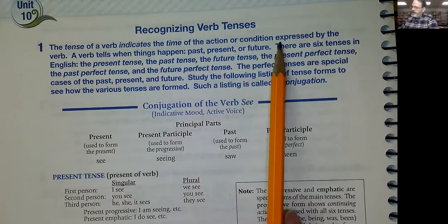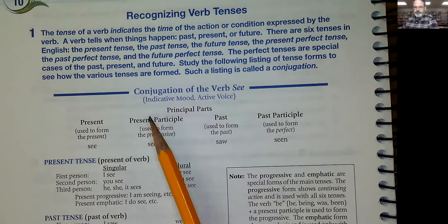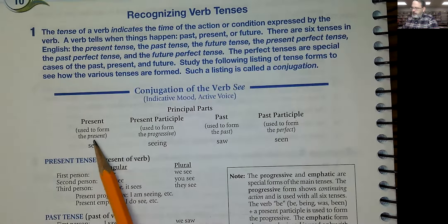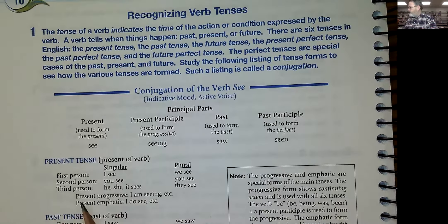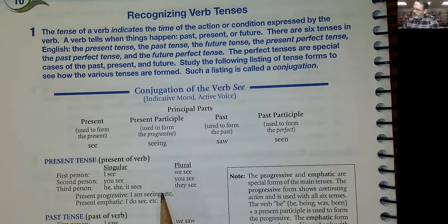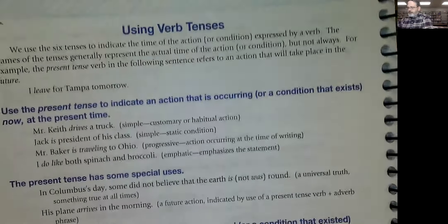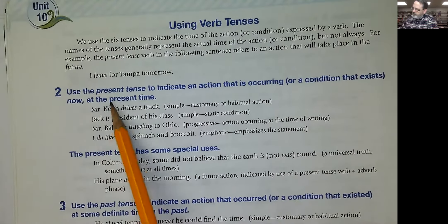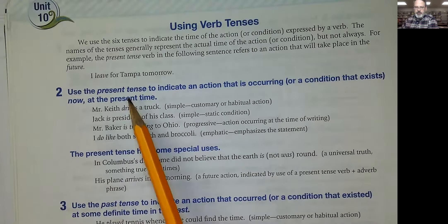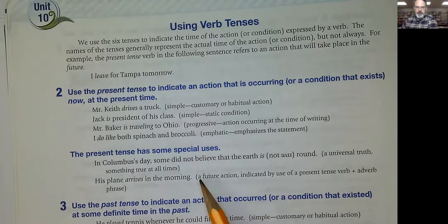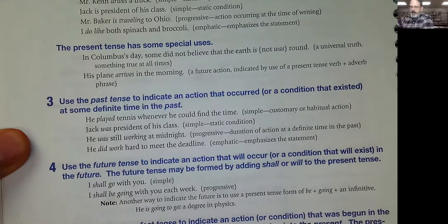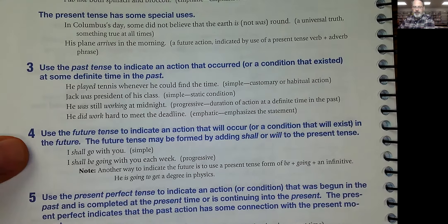The tense indicates the time of the action or condition expressed by the verb. It lists all the tenses, and on page 92 it lists example tenses of all of them. My favorite part is on the next page, 94 — it goes through and tells you when to use each one. Use the present tense to indicate an action that is occurring or a condition that exists now in the present time. Use the past tense to indicate action that occurred or a condition that existed at some definite, specific time in the past.